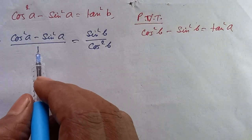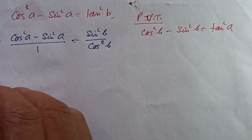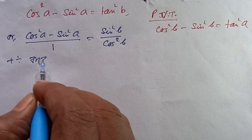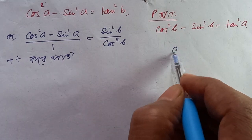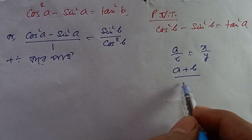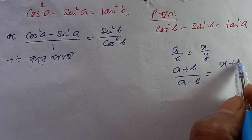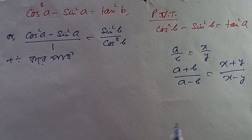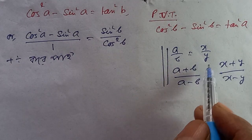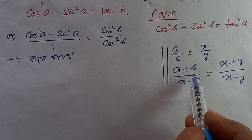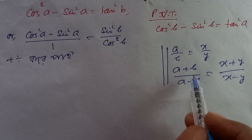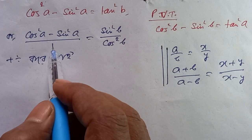We apply componendo and dividendo. The yoghavak rule states: if a by b equals x by y, then a plus b by a minus b equals x plus y by x minus y.